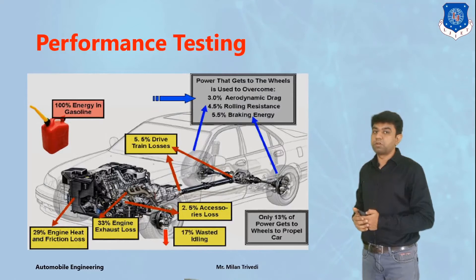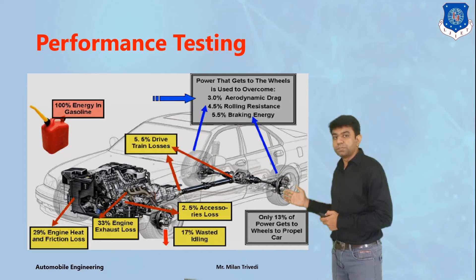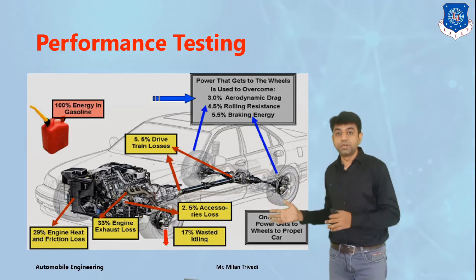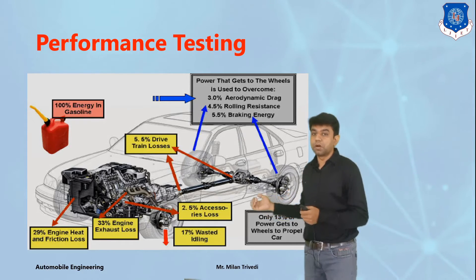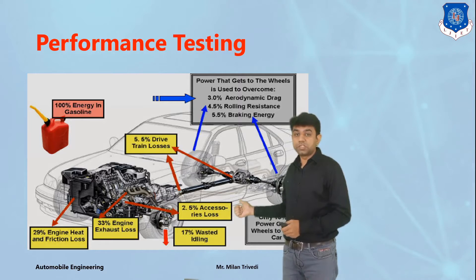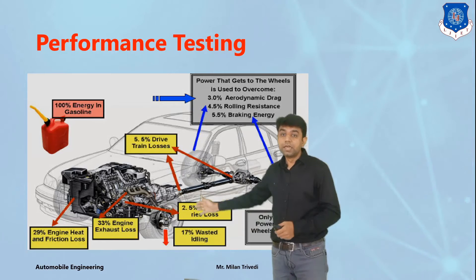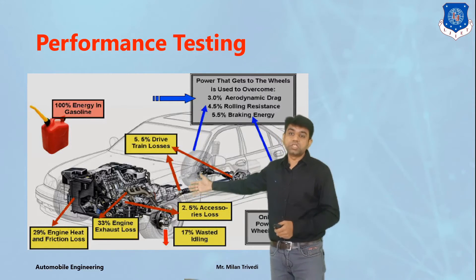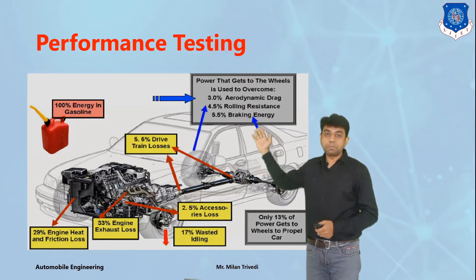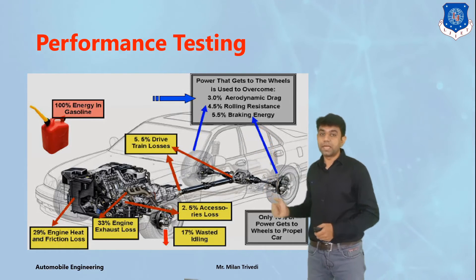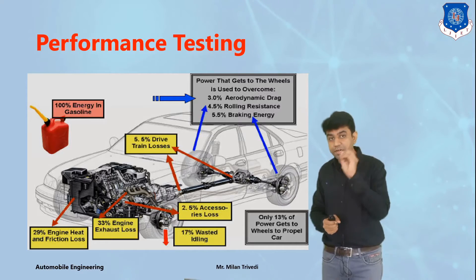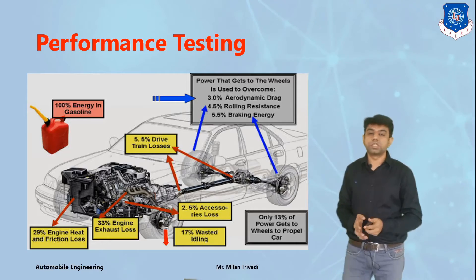In the fourth chapter we discuss performance testing, with the main topic being energy conservation. This covers how much energy is consumed at different parts of the automobile. For example: 2.5% of fuel energy goes to accessories, 17% to idling, 33% to exhaust, 29% to engine heat and friction loss, 3% to aerodynamic drag, 4.9% to rolling resistance, and 5.5% to braking energy. As a result, out of 100% fuel input, we get only 13 to 15% as useful fuel efficiency.